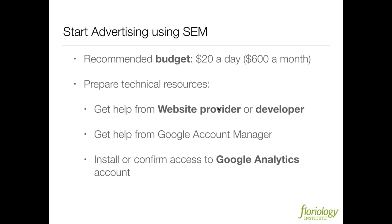Once you start spending about $600 a month, that signifies to Google that you're serious about advertising, so they will assign a Google account manager to you. Don't get on that phone with a Google account manager unless your website provider or developer is also on the phone. Let them communicate in geek speak — at least you're on the phone to understand what's going on, but let them work with your developer to make sure you set up these accounts right.